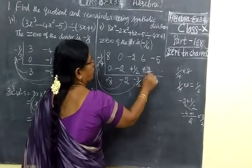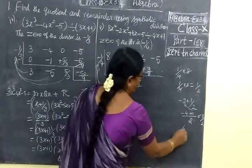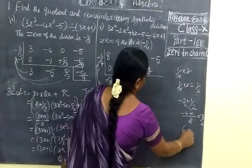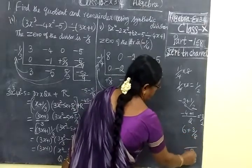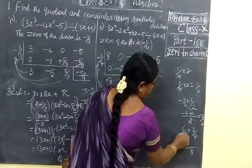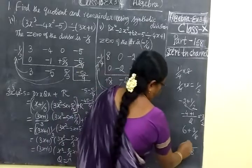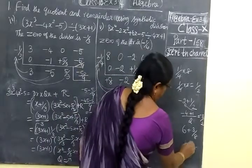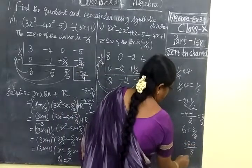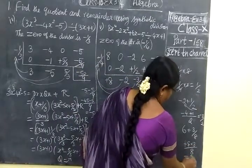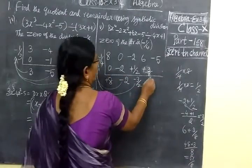This you have to simplify: 6 plus 3 by 8. LCM is 8. So 48 plus 3 gives 51 by 8.